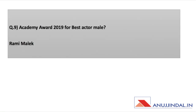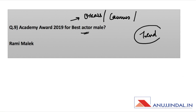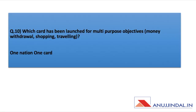Academy Award 2019 for Best Actor Male (Oscars) — whenever Oscars are announced there is a trend of questions being asked on Oscar awards. Rami Malek is the answer for Best Actor Male. The next question was about which card has been launched for multi-purpose objectives — the One Nation One Card was in the news in both 2018 and 2019, making it an expected question.